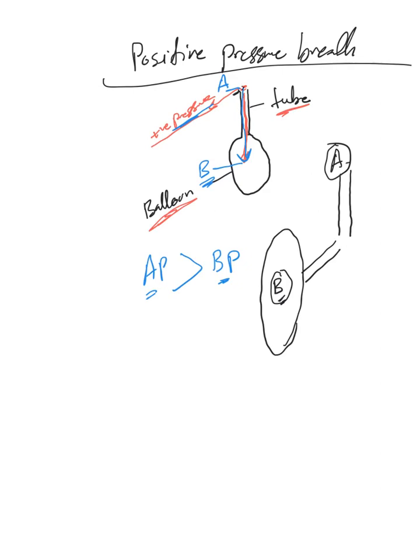Apply positive pressure at A - the proximal airways - and create that pressure gradient. Because now the pressure at A is bigger than B, the air will flow.